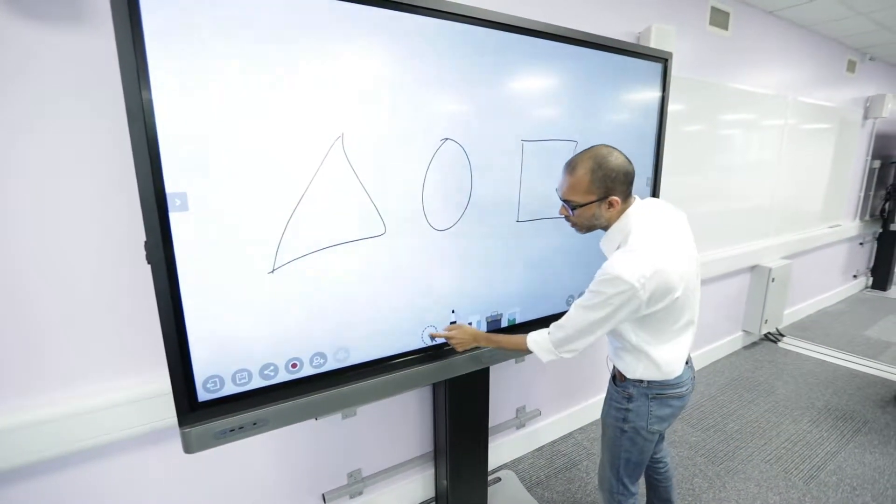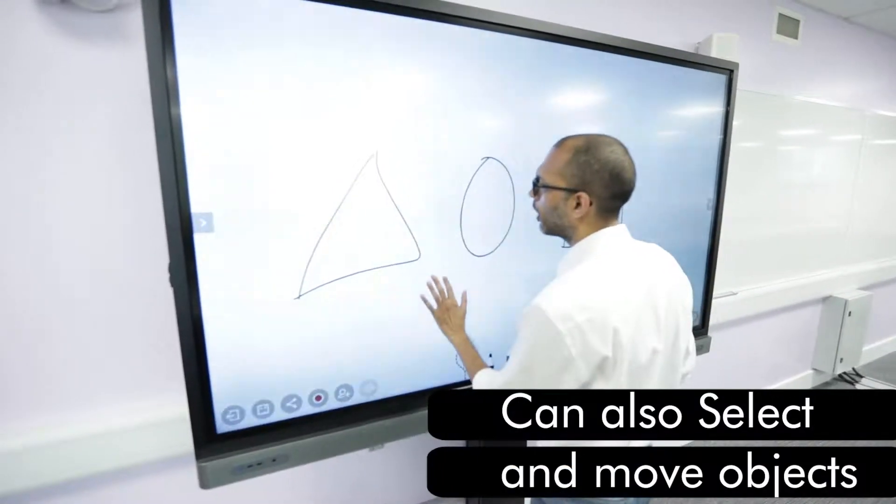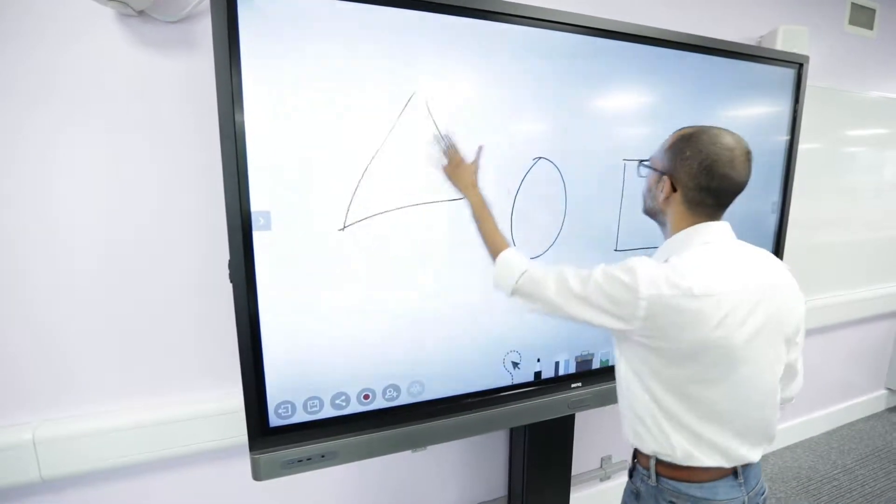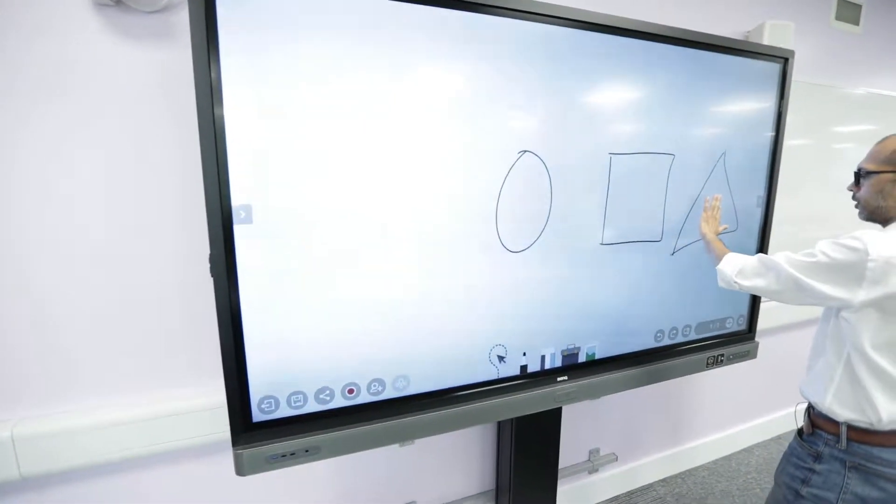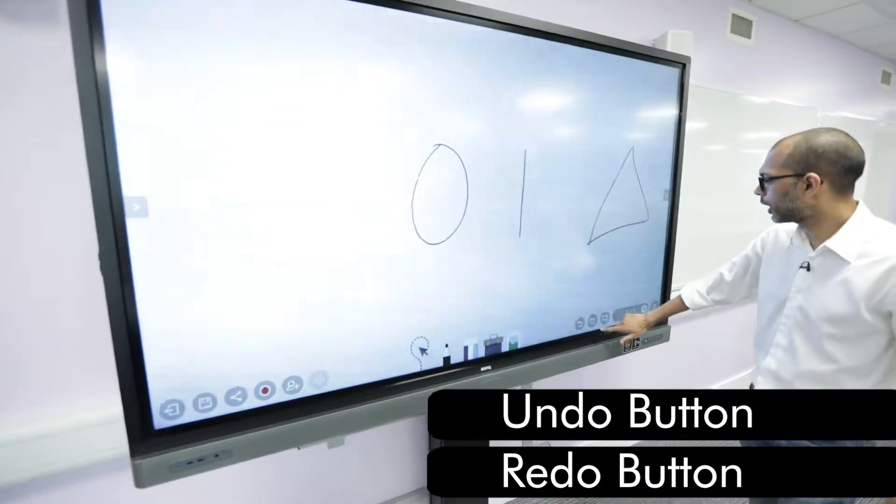This tool here allows me to select part of what I wrote, and I can move it around. These are the undo and redo buttons.